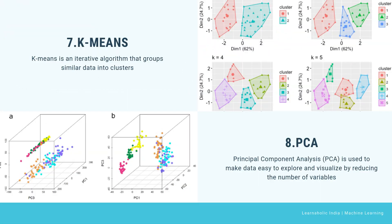The next algorithm is K-means. K-means is an iterative algorithm that groups similar data into clusters. It calculates the centroid of k clusters and assigns each data point to the cluster having the least distance between its centroid and the data point.